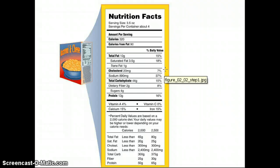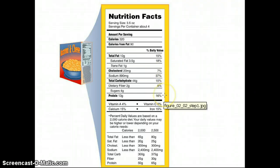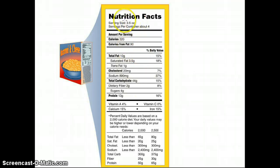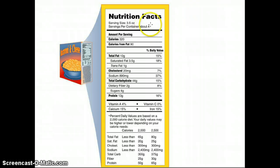You can also use this video to answer some of the questions in your study guide. The very first thing I want to point out is that all of the information on this nutrition facts label is based on the serving size. For this macaroni and cheese, it's three and a half ounces for a serving, and there are four servings per container.